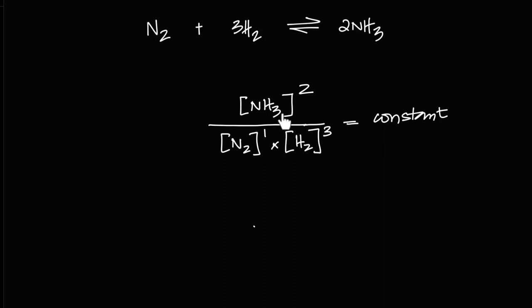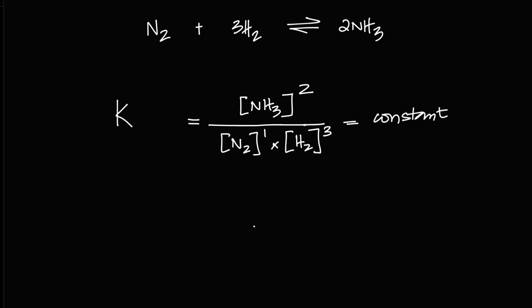Constants are normally denoted by the letter K. In American boards this is called K of the equilibrium. More specifically, because these square brackets always mean concentration — concentration in moles per dm³ — this is known as Kc: the equilibrium constant in terms of concentration.